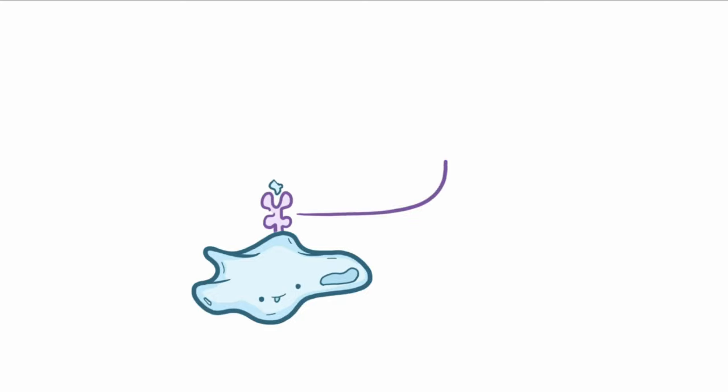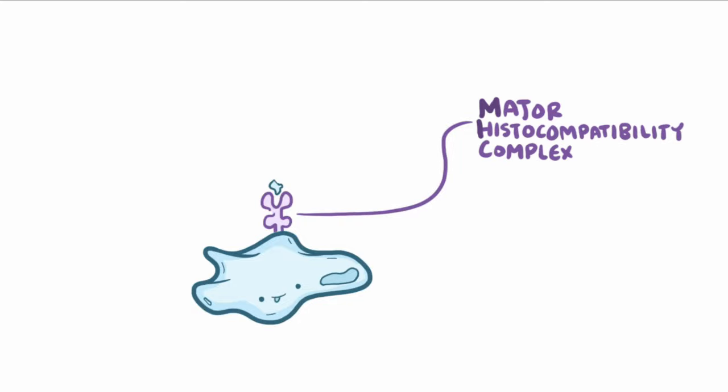Normally, the immune cells are ready to spot and destroy anything foreign that could cause the body harm. To help with this, most cells in the body have a set of proteins that combine together to form something called a major histocompatibility complex, or MHC, and this is a molecule that sits on the surface of their cell membrane.